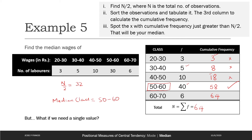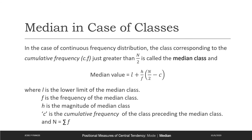But what if we need a single value for the median? In that case we'll have to use a formula. The first step is finding the median class. Then, if your median class is L to K, we use the formula: Median = L + H × ((N/2 − C) / f), where H is the magnitude of the median class (K − L), f is the frequency of the median class, N is the total number of observations, and C is the cumulative frequency of the class preceding the median class.